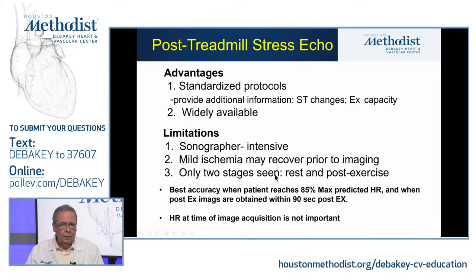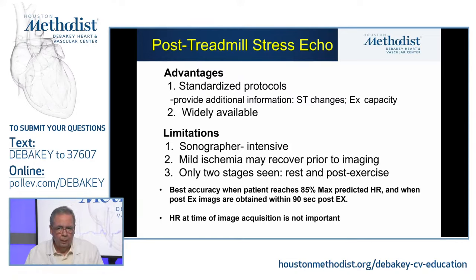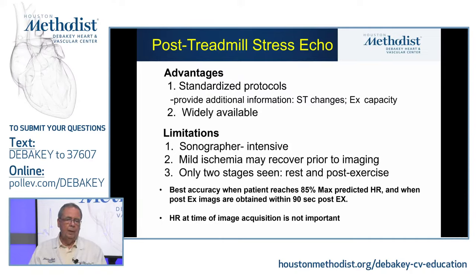The best accuracy is when patients reach 85 percent of maximal predicted heart rate for their age, and when post-exercise images are obtained very quickly — within 90 seconds post-exercise. The heart rate at the time of image acquisition is not important. If the patient reached a heart rate of 150 and a minute later is down to 100, that's not a problem. What matters is the heart rate the patient reached during the exercise stress.